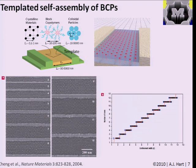The system transitions abruptly from one discrete number of rows to another. In other words, if you have a channel width in between the best fit width for three rows and two rows, you don't get extra micelles as if they want to form half of an extra row — you get a discrete transition between one fixed number of rows to another fixed number of rows.